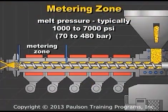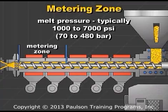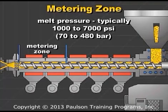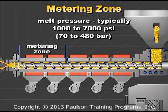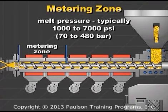The melt pressure in the metering section is typically from 1000 to 7000 psi or 70 to 480 bar. This pressure tries to force some of the plastic back down the screw channel as pressure flow.